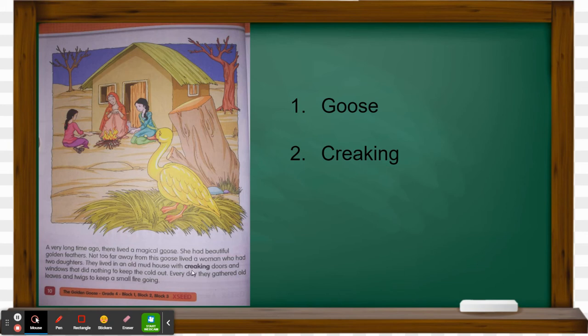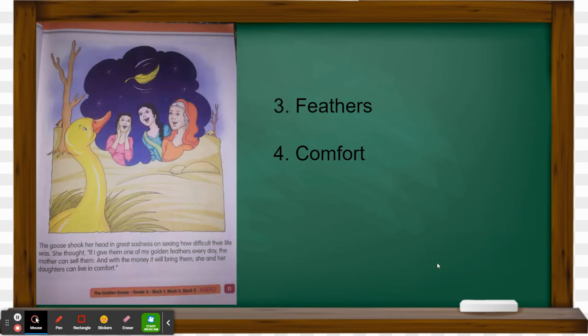The goose was feeling very bad seeing their condition. Underline the words 'goose' and 'creaking.' Turn to the next page. The goose was thinking about how to help the old woman and her two daughters. It thought it would give them one golden feather every day so they could sell it and get money, and live in comfort.